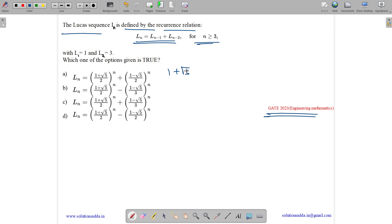So here we have 1 plus root 5 by 2 plus 1 minus root 5 by 2. So root 5 and root 5 will cancel and we will get 2 by 2 which is 1. Okay.